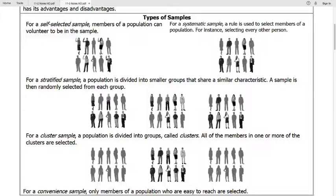A systematic sample, that's next. This is maybe a rule that allows us to choose a person. So one example would be selecting every other person as they walk into a room.